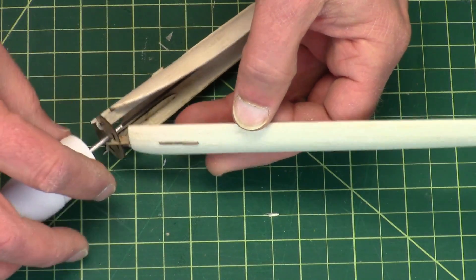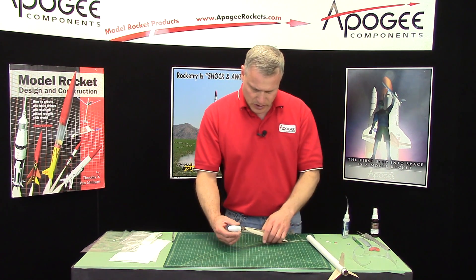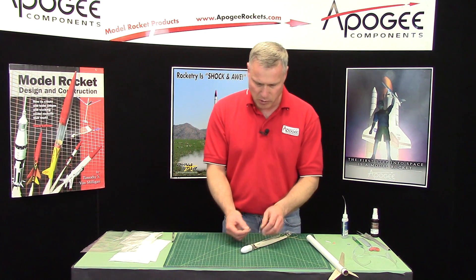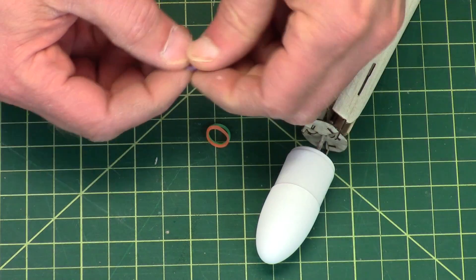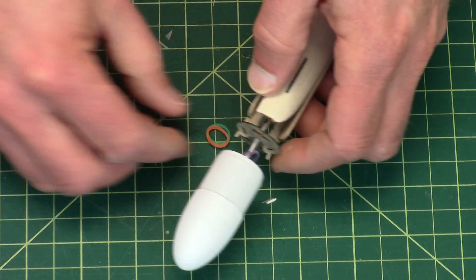All right, so now to put the rubber bands on, we're going to take the rubber bands and just open them up, slip them over the nose cone onto the aluminum shaft there.